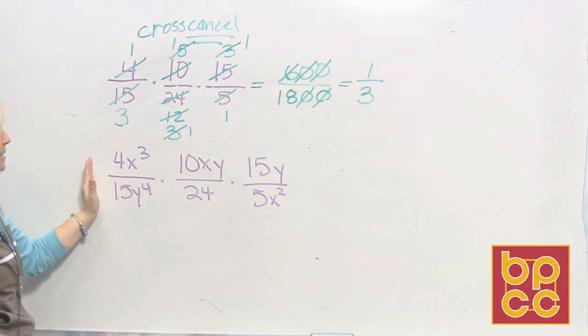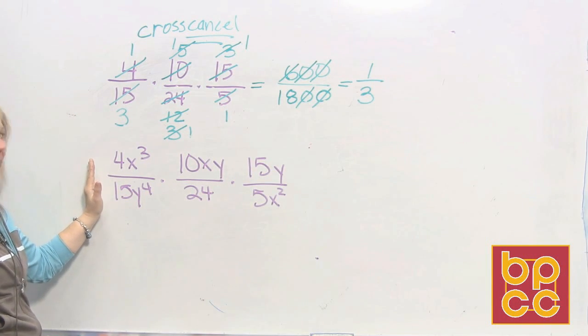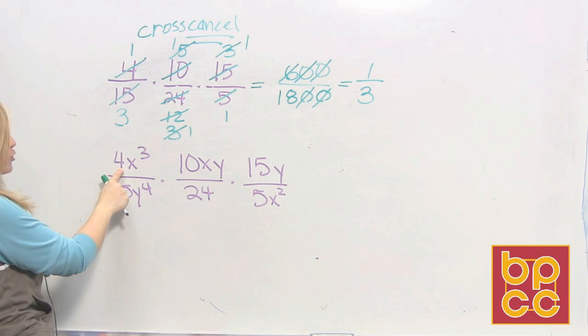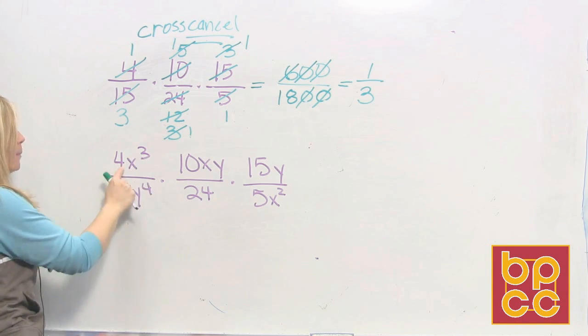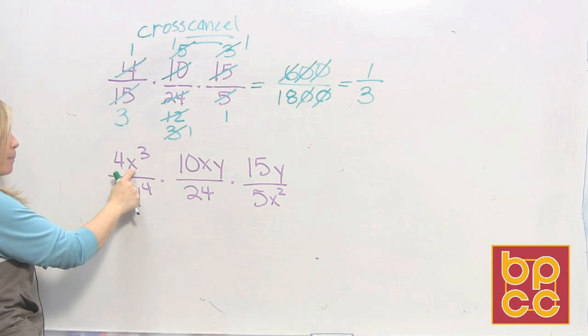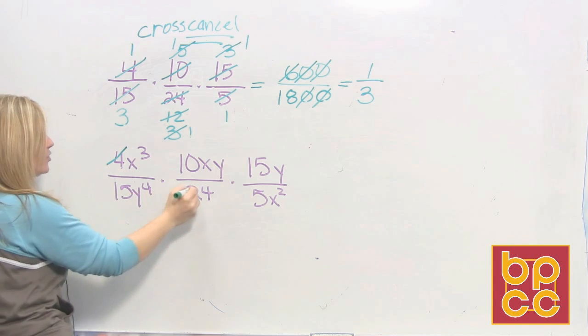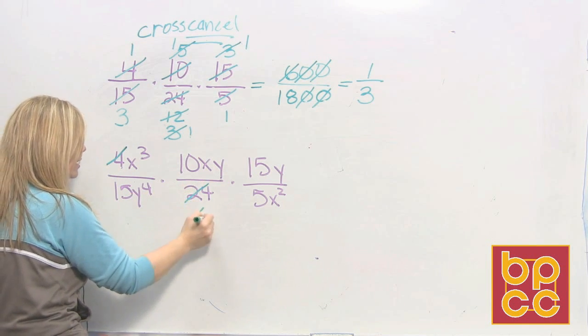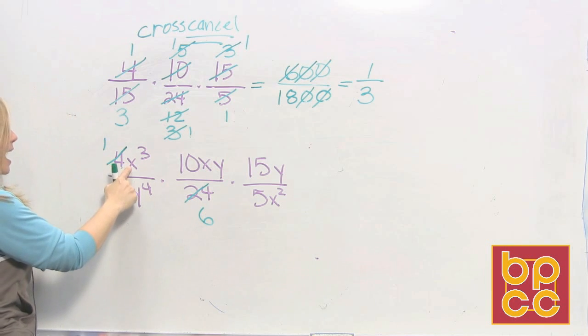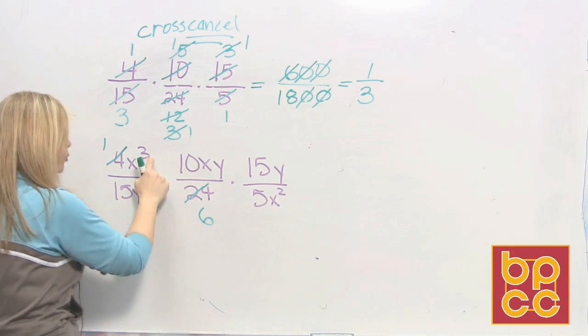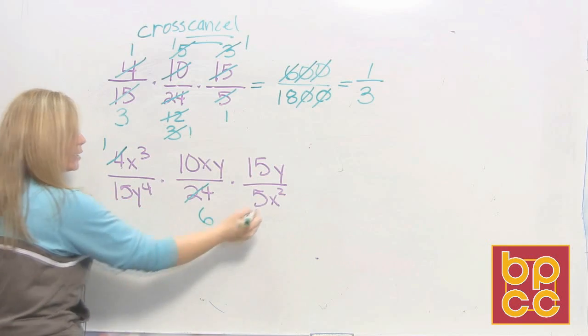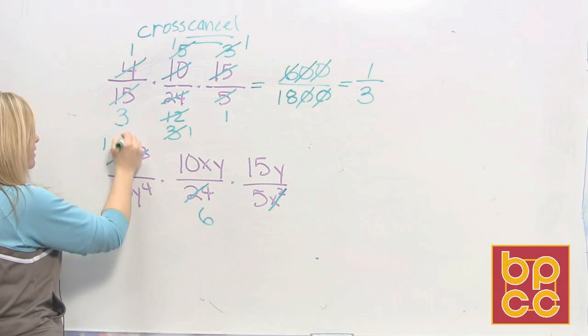So now let's take example one of our notes. This is how I start. I start with the first numerator. I look and see what can I divide 4x cubed. Because this is a multiplication I can take it apart. 4 goes into 4 once. 4 goes into 24 six times. x cubed can divide by x squared. 3 take away 2 is 1. So this will be gone and this will leave us with an x.